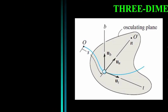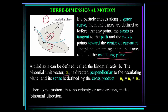Three-dimensional motion: if the particle moves along a space curve, the n and t axes are defined as before. At any point, the t-axis is tangent to the path, and the normal axis is directed towards the center of curvature and perpendicular to u-sub-t. The plane containing the n and t axes is called the osculating plane. We can define a third axis b, the binormal axis. The binormal unit vector is perpendicular to the osculating plane, and its direction is determined by the cross product u-t cross u-n. There is no motion, thus no velocity or acceleration, in the binormal direction.